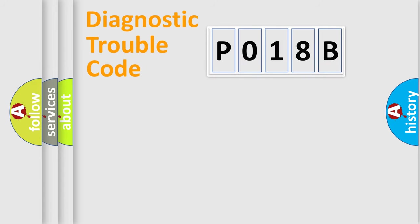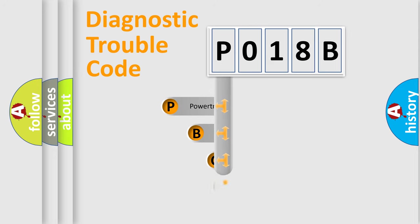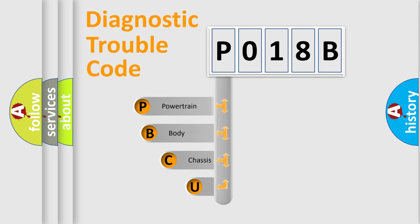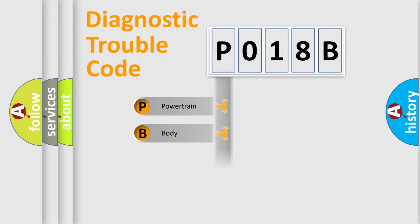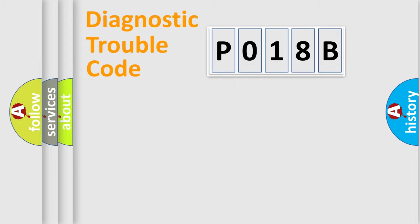Let's look at the history of diagnostic fault code composition according to the OBD2 protocol, which is unified for all automakers since 2000. We divide the electric system of the automobile into four basic units: Powertrain, Body, Chassis, and Network.